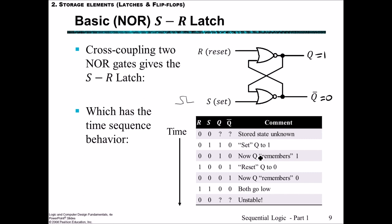Once that set pulse goes back to 0, we still find that we've remembered Q. So we're using this storage element to store the state of set in Q — it remembers 1. Now, if we get a pulse on the reset coming in whilst set is 0, then we have Q going to 0 and Q0 going to 1. So now Q is remembering 0. Q stays at 0 whilst reset is 0 and whilst set is 0.